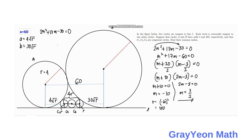Since r = 100 would be larger than circle A's radius of 4, which contradicts the figure, we discard n = −10. Taking the valid solution n = 3/2, we get r = n² = (3/2)² = 9/4. This value is less than 4, which is consistent with the circles C1, C2, C3 being smaller than circle A. Therefore, the common radius is r = 9/4 units.